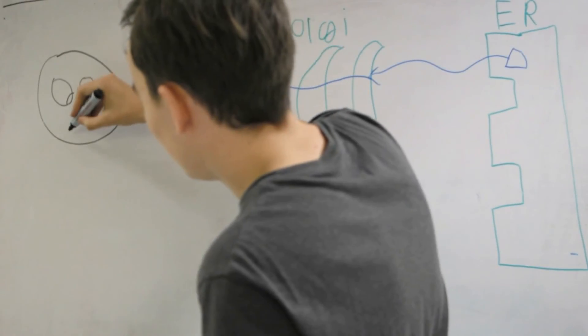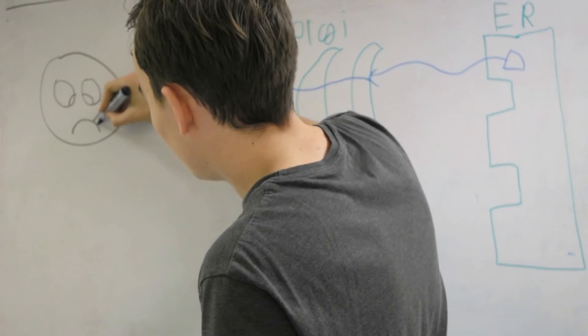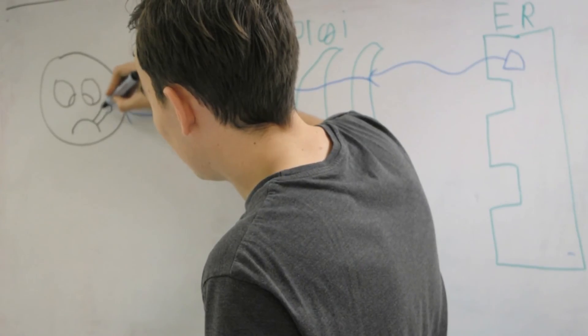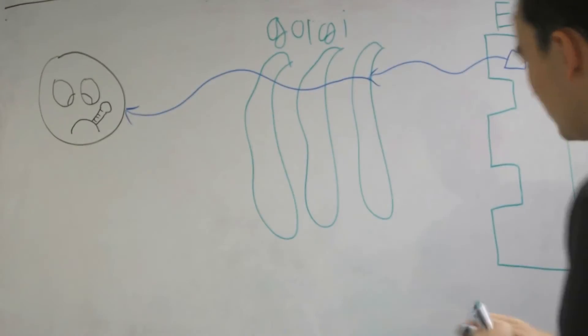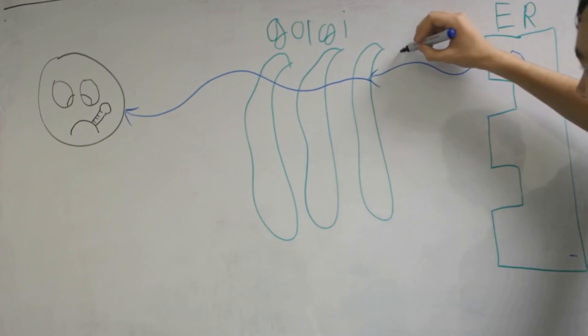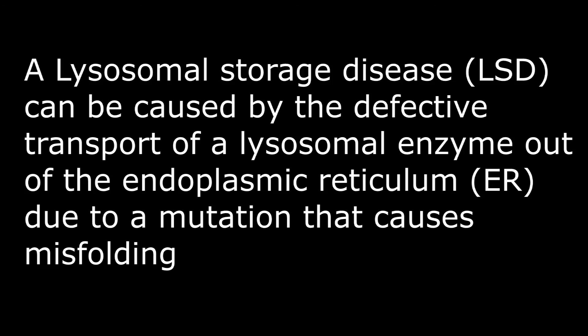This can happen because the enzyme is unable to leave the ER and go to the Golgi to be packaged. This happens in Gaucher's disease where there is a dysfunction of glucocerebrosidase as it is misfolded and it can no longer leave the ER.